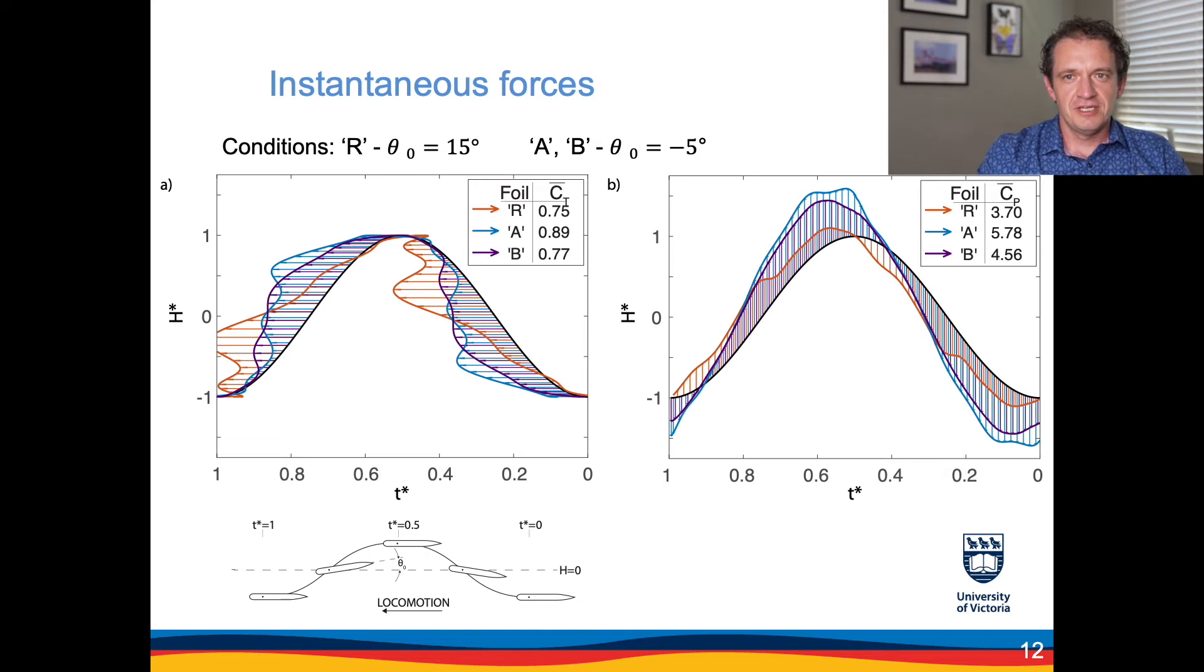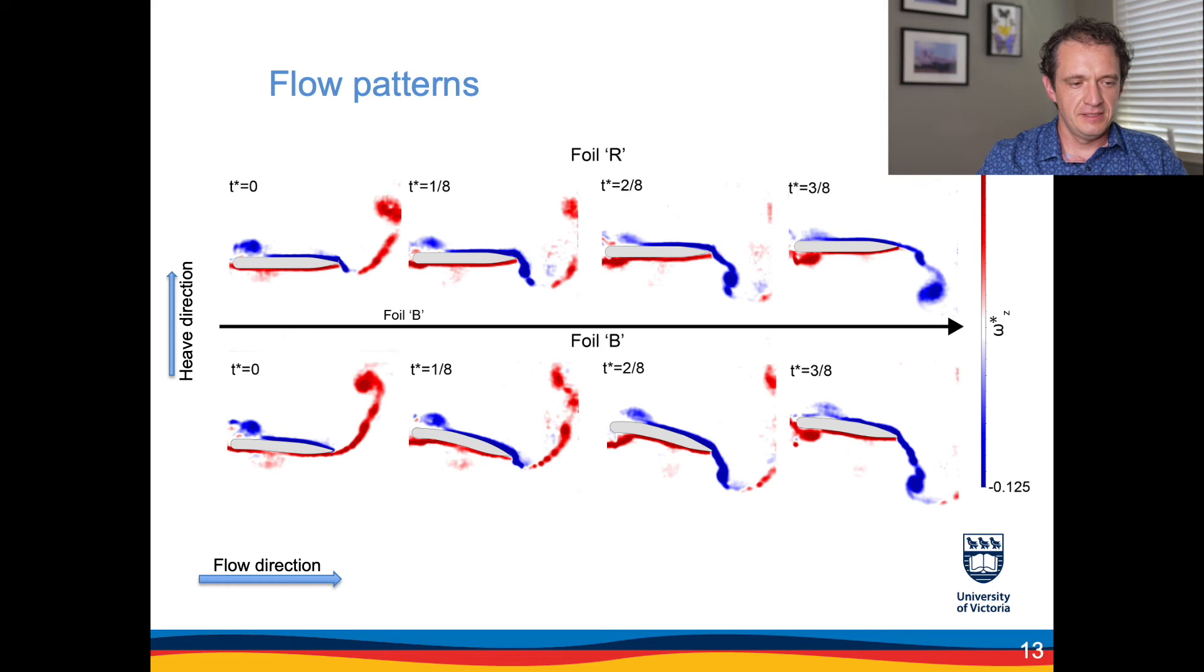This timing of the generation of the forces is related to the shedding of the vortices into the wake, and this can be observed by looking at the vorticity contours of the flow around the foil. The bottom row of images corresponds to the flexible foil and the top row is the rigid foil at the same phases. The differences between the flow structure are related to the timing of the generation of the negative vorticity here.